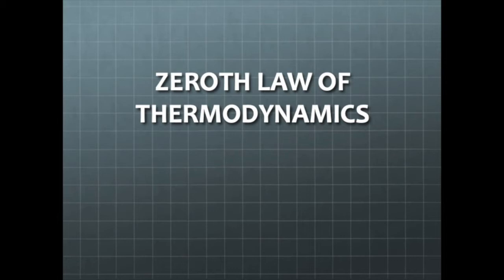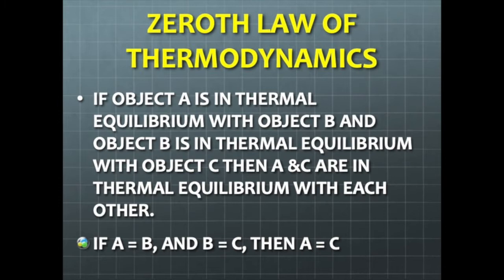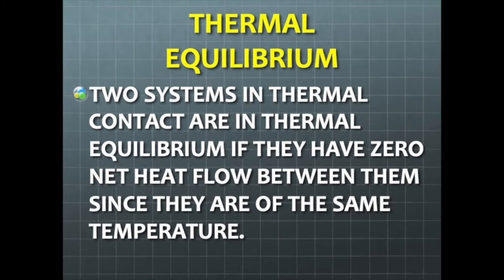The zeroth law of thermodynamics states: if object A is in thermal equilibrium with object B, and object B is in thermal equilibrium with object C, then A and C are in thermal equilibrium with each other. In other words, if A equals B and B equals C, then A equals C. Two systems in thermal contact are in thermal equilibrium if they have zero net heat flow between them, since they are at the same temperature.